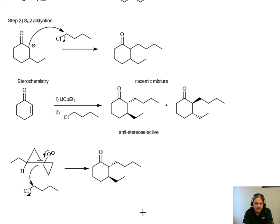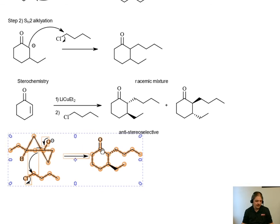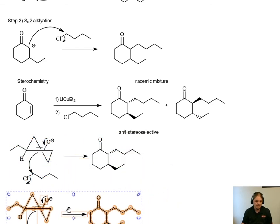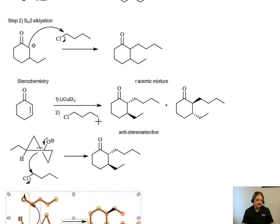So that leads to this enantiomer of the product. If we have the enantiomer of that intermediate, so the mirror image, we would get the mirror image of the product. Let me try something.